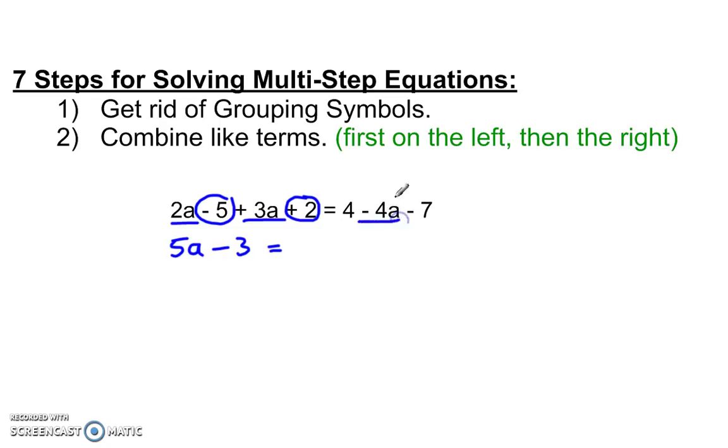Negative 4a is by itself. We'll put the variable first. Variable term first. And then 4 and negative 7, those go together. 4 minus 7 is also negative 3.